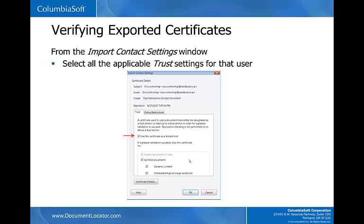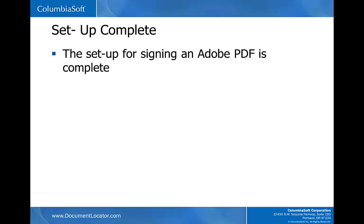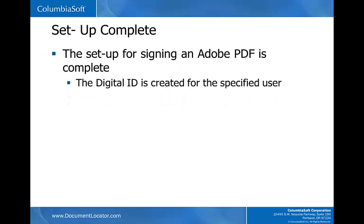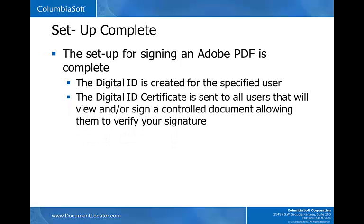Once the signature validation succeeds, the certificate can be trusted for certified documents. Within the category of certified documents, there are certified documents that contain Dynamic Content and Embedded High Privilege JavaScript, and those are both trust options for the imported trusted identity certificate. Click OK. The setup for signing an Adobe PDF is complete. The digital ID is created for the specified user. The digital ID certificate is sent to all users that will view and/or sign a controlled document, allowing them to verify your signature.